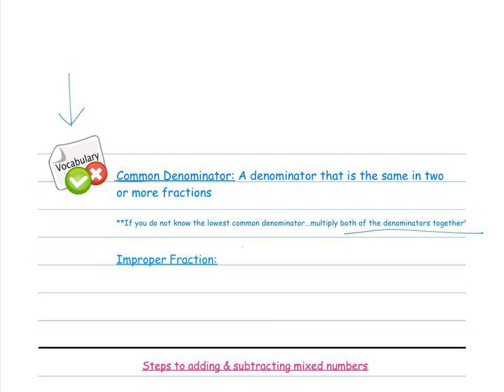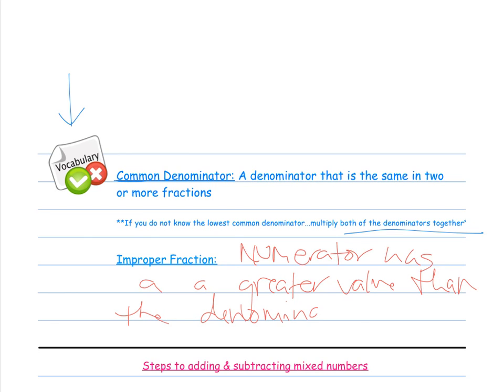An improper fraction is when the numerator of a fraction has a greater value than the denominator. For example, that would be if I had 7 out of 5. So my part on the top is more than my whole on the bottom.